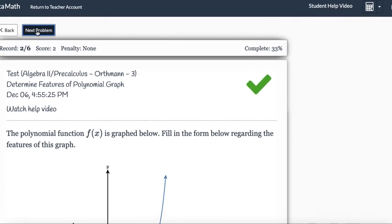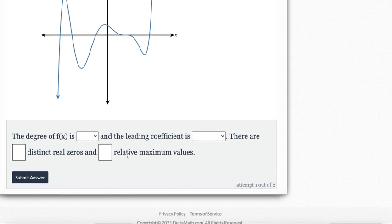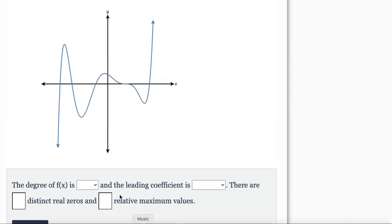All right, let me show you the one where it says... you see it says relative maximum values. So maximums, remember, are the hills. One and two. Two hills. This one is again odd because they're pointing in different directions. Leading coefficient is positive because started from the bottom, now we up there.